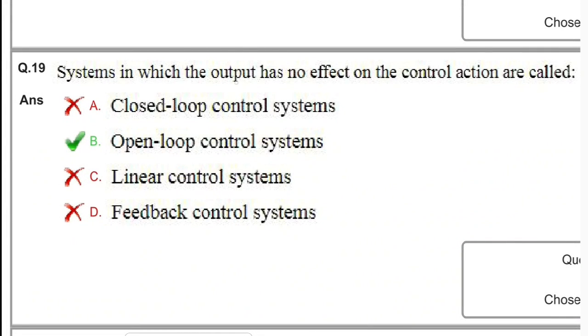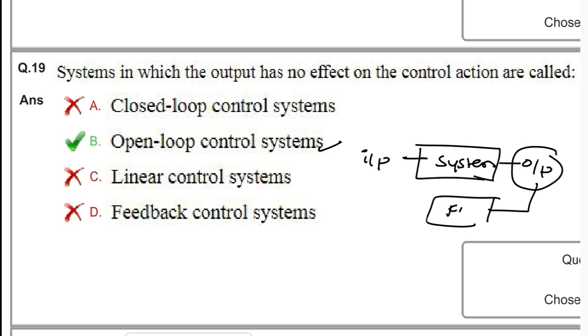System in which the output has no effect on the control action is called open loop system. In a system with input and output, if output has no effect on input because there's no feedback connection, it's called an open system. If feedback is there, it's called a closed loop system.